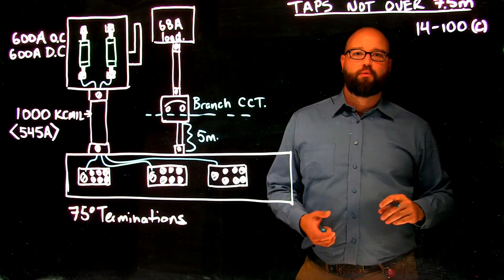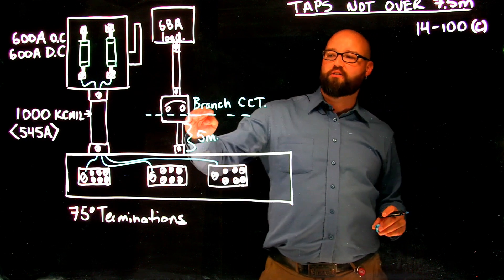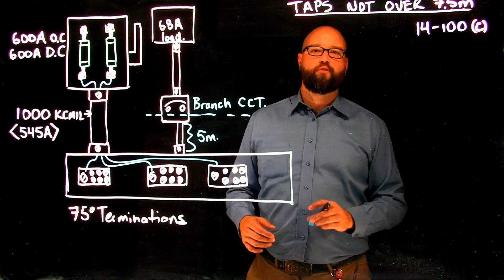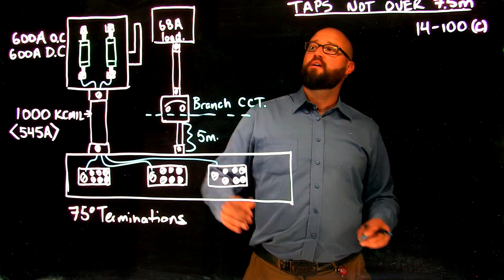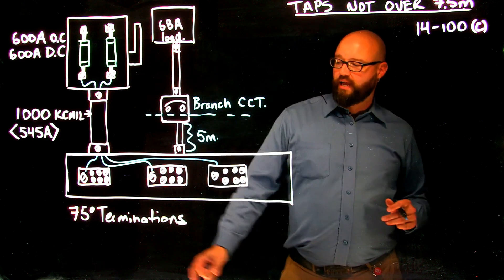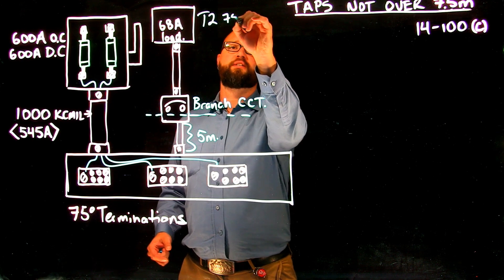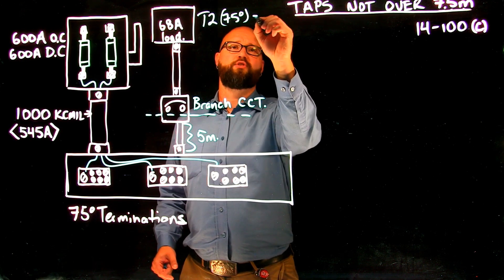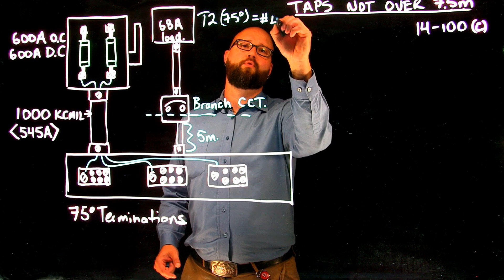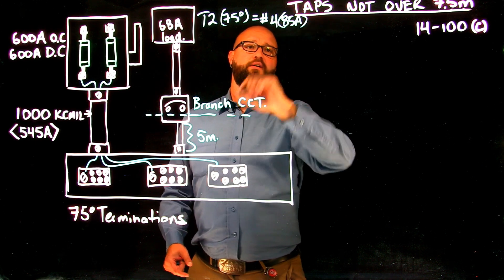I would do this just as I would do any other branch circuit calculation. It's on the downstream side of an overcurrent so there are no special rules as far as tap conductors. I have a 68 amp load. Again with the 75 degree termination I can go table 2 in the 75 degree column and I can choose a number good for 85 amps.